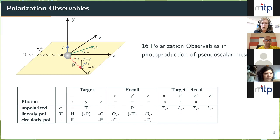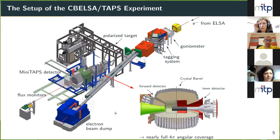To measure these observables we use the CB-ELSA-TAPS experiment located at the ELSA accelerator in Bonn. We have an electron beam of 3.2 GeV; a goniometer with different radiator targets produces photons via bremsstrahlung, with a tagging system to determine the photon energy. The main calorimeter consists of the Crystal Barrel and the MiniTAPS detector in the forward direction. Its nicest feature is nearly full 4π angular coverage and full φ symmetry — the ideal setup for measuring polarization observables.